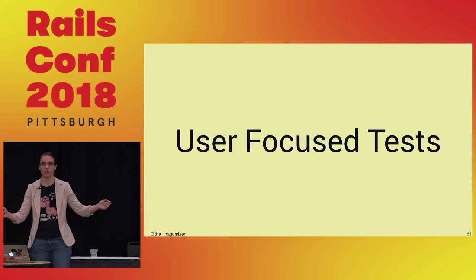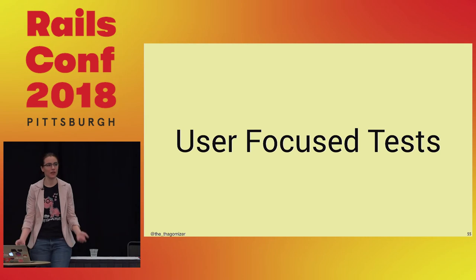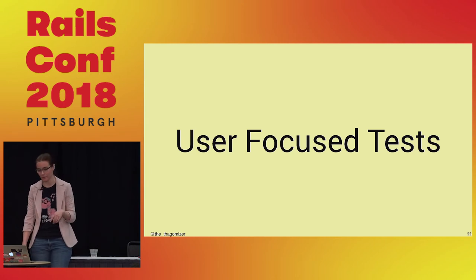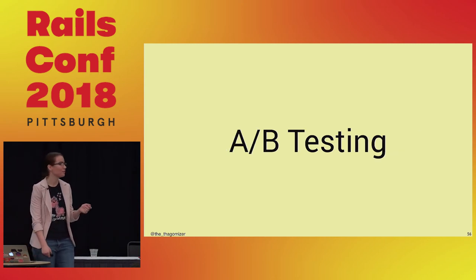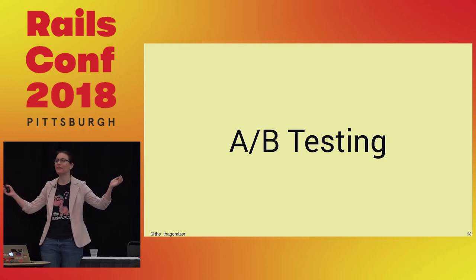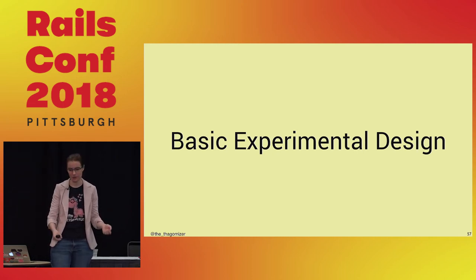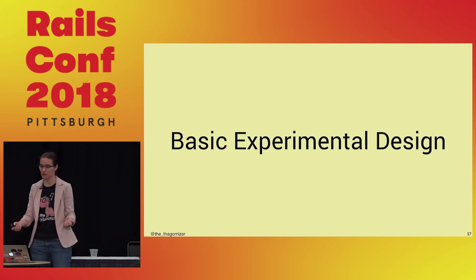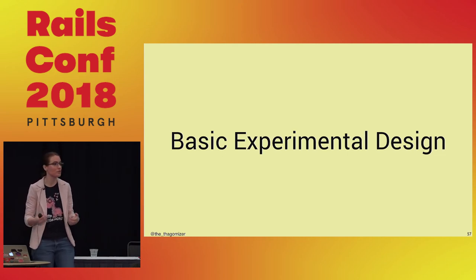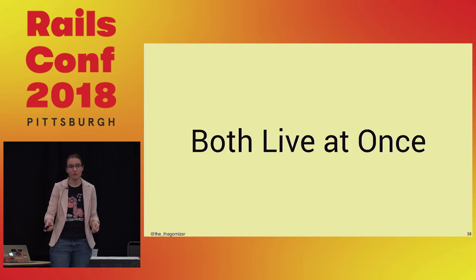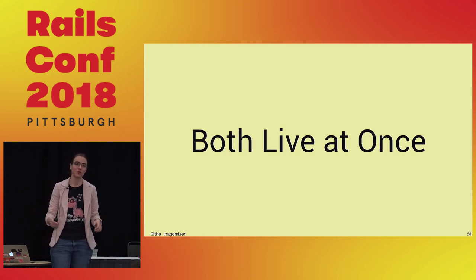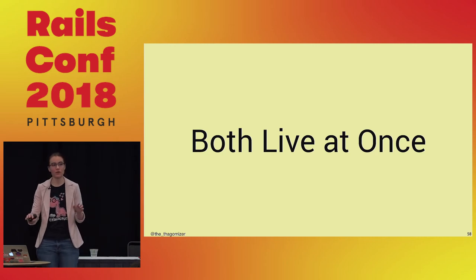Second section: user-focused tests. These are things that test the user experience. Who's done A/B testing? A/B testing is just an experiment — you have a control group and some experimental groups, run users through different experiences, and when you have enough statistically valid data, figure out if there are significant behavioral differences and decide which one to go with. Different from blue-green because in an A/B test, both versions are live at the same time, which means you have interesting things with data integrity.